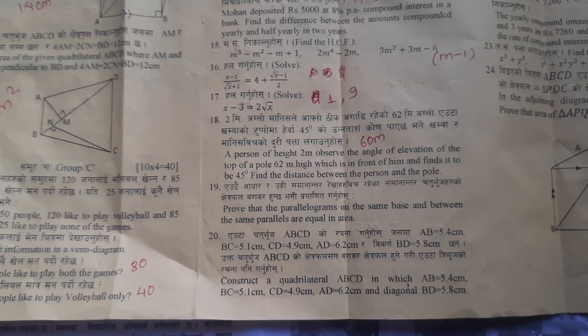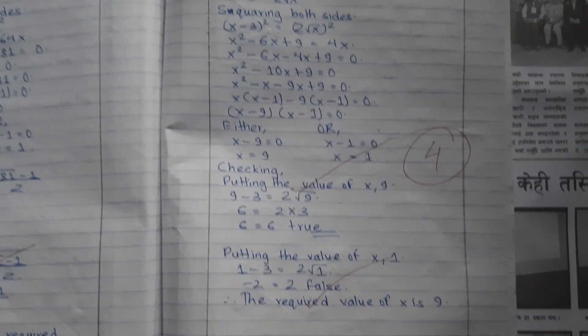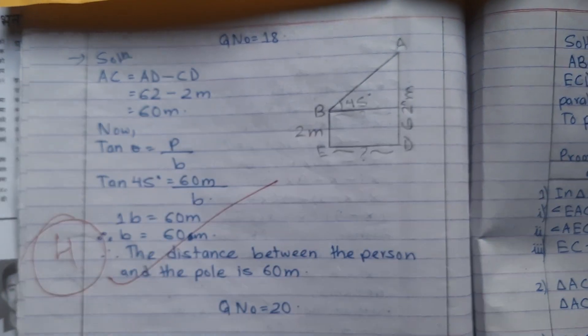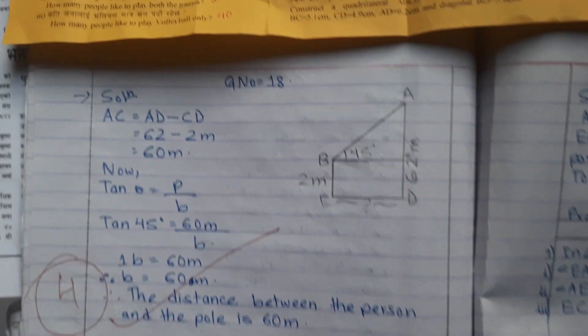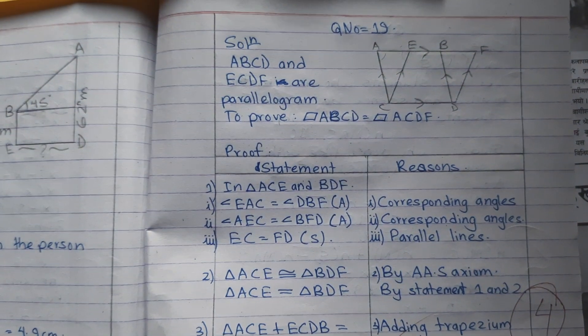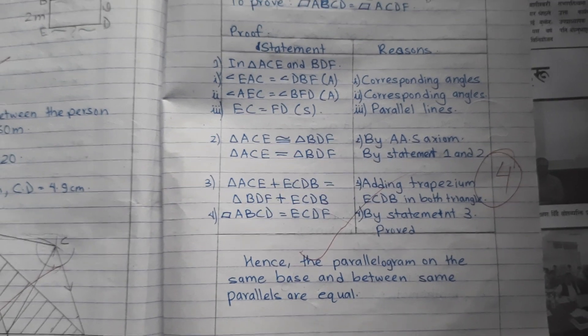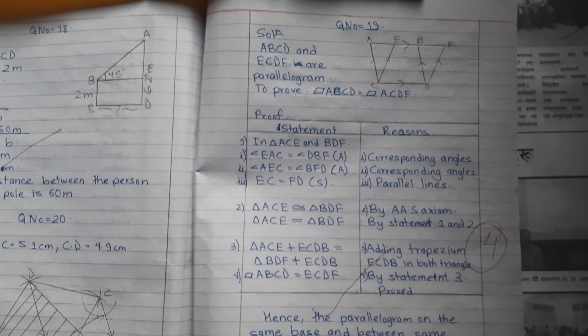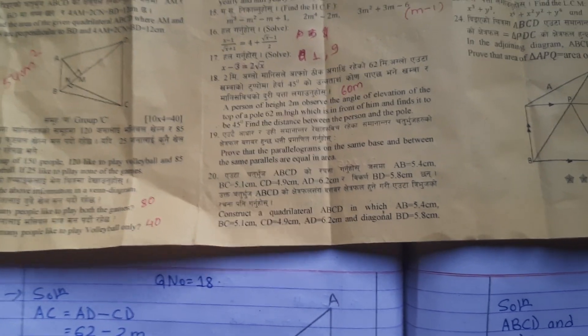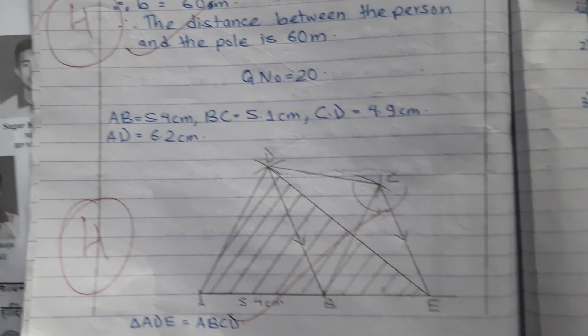Question number 17 solved. Question number 18 — height and distance. Question number 19, prove that. Question number 20 — it's all about construction, in this way.